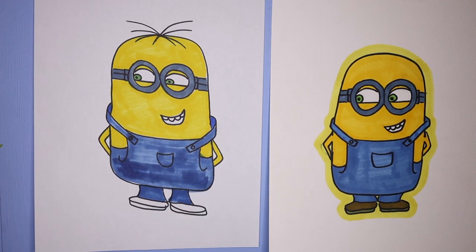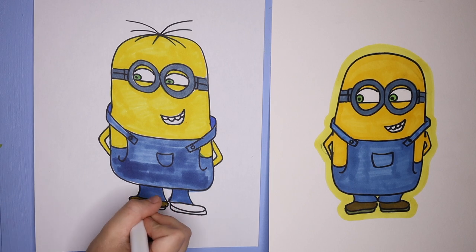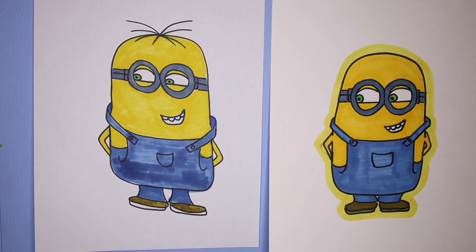So don't forget about the little leg pieces there, and then for the shoes, I just did two different shades of brown, so I went in with a lighter brown and then a darker brown for the soles.